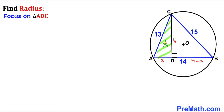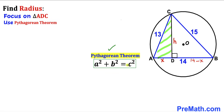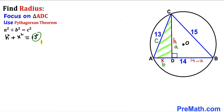Now let's focus on right triangle ADC and apply the Pythagorean theorem: a² + b² = c². In our case, a is h and b is x, so we get h² + x² = 13² = 169. Moving x² to the right-hand side gives us h² = 169 − x². Let's call this Equation 1.